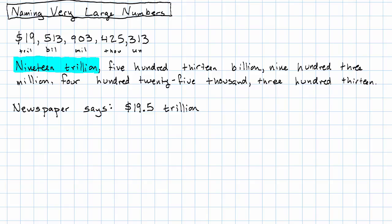So what's the newspaper actually going to say? Nineteen point five trillion. Notice, instead of putting in a bunch of zeros, they actually wrote the word trillion. And notice also, to indicate part of a trillion, they gave you a decimal. And finally, notice all these digits after the five, the newspaper rounded them away because they're just not that important.